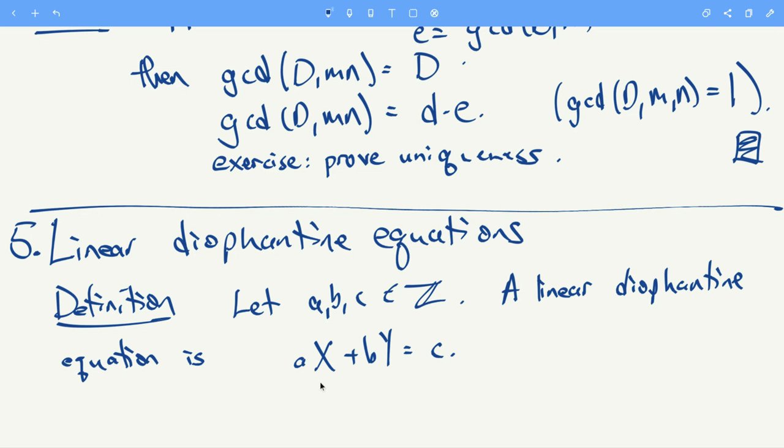It's just an equation that's like ax plus by equals c, where a, b, and c are fixed integers and the variables are x and y. And we want to solve this equation for integers x and y. We want to find all those solutions.